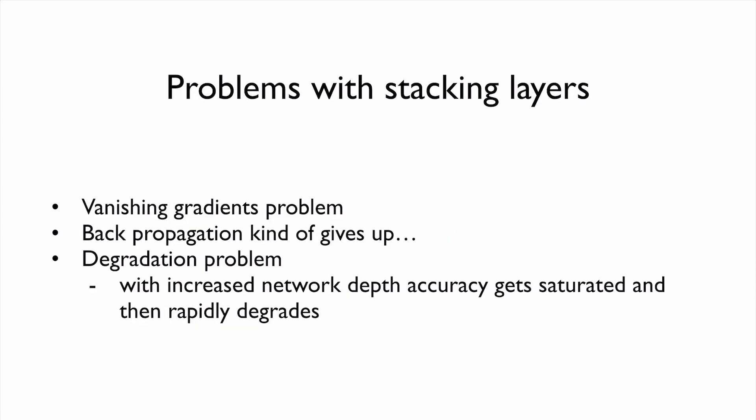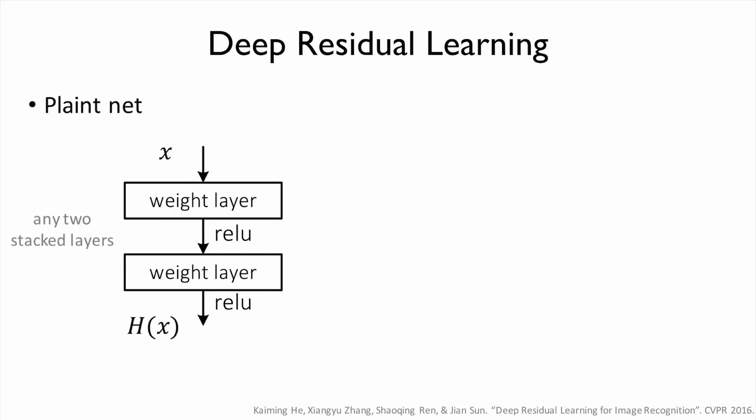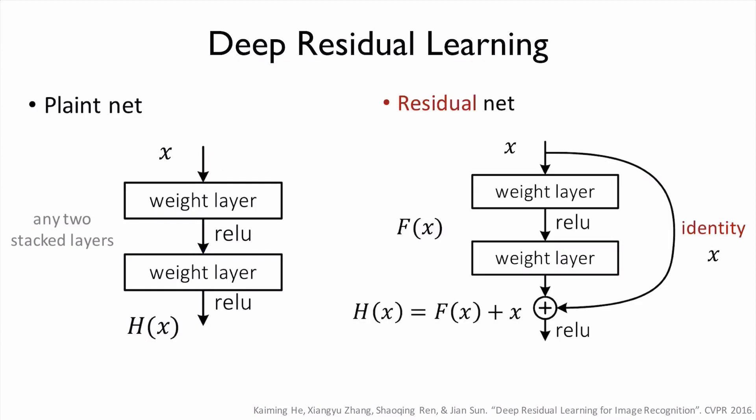Basically, once we have a deeper layer, like more than 50 layers, the vanishing gradient problems happens again. Our backpropagation does not work very well in this case. So one of the solutions is using deep residual learning. This is our plain network. Basically, it's connected to multiple layers like a stack. However, in proposed residual learning, what we do have is that residual connection, which is sort of bypassing this, and then we add these two values and then use this one as next input.